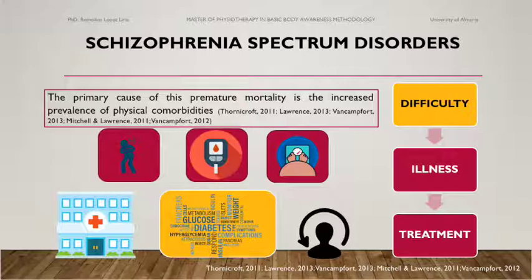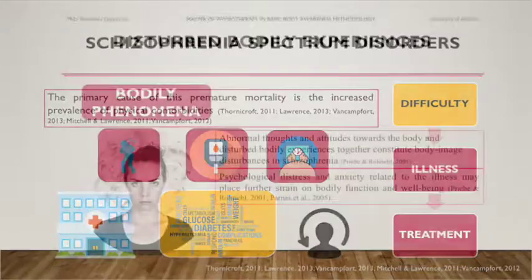They are also hampered by difficulty in changing their lifestyle, which can have a beneficial influence on many of the physical comorbidities seen. Much of this difficulty stems from factors related to their illness: negative symptoms, low self-esteem, resistance to treatment, and extrapyramidal and metabolic side effects of antipsychotic medication.